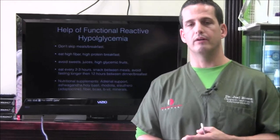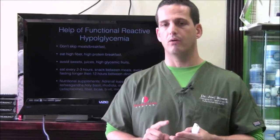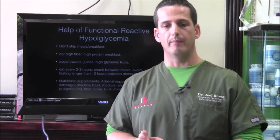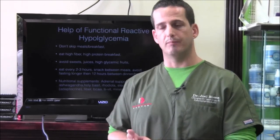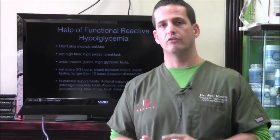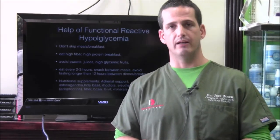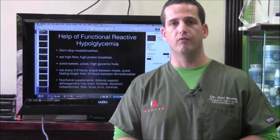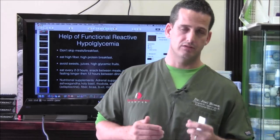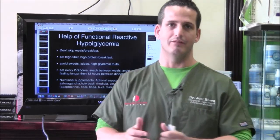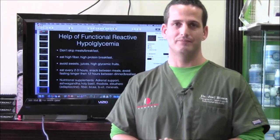Other helpful supplements include adrenal support supplements — ashwagandha, holy basil, rhodiola, and eleutheria. Adaptocrine from Apex Energetics is a product we use, along with plenty of fiber, branched-chain amino acids, B vitamins, and minerals. I hope you found this really informative. We wanted to talk about your blood sugar levels, and I look forward to our next installment of Your Adrenal Fix. Thank you so much.